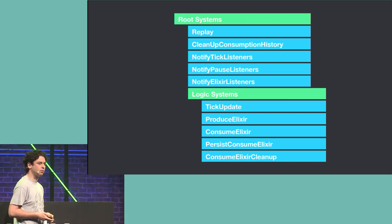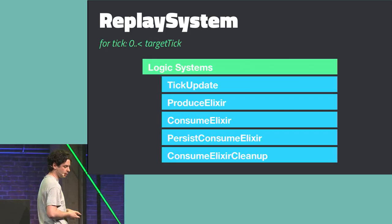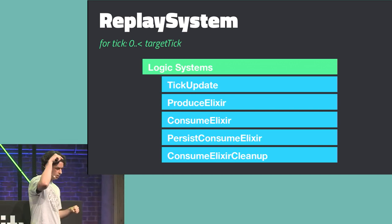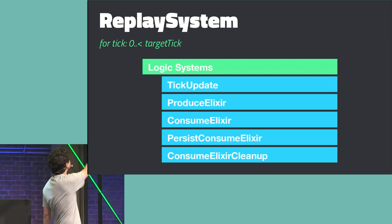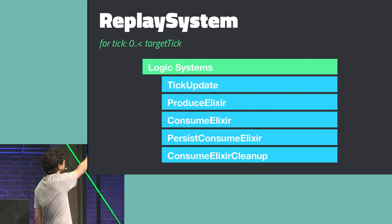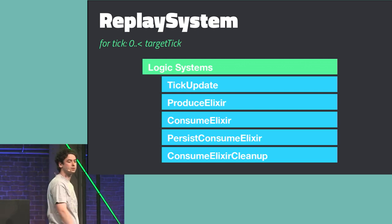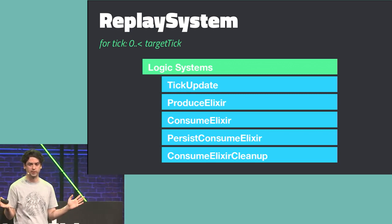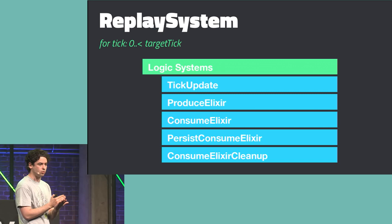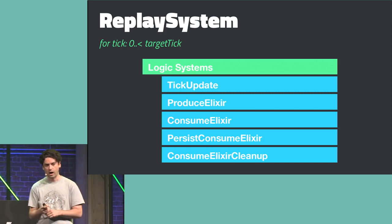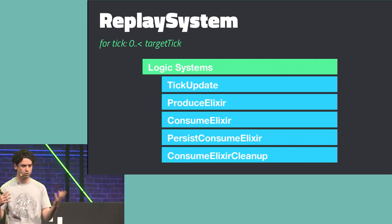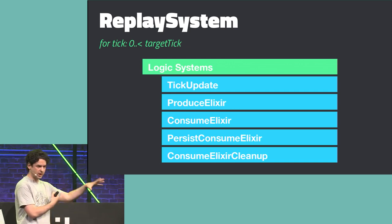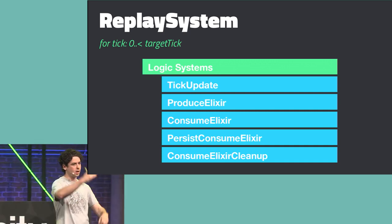How does the replay system work? The replay system is a reactive system that triggers on the component telling us the target tick. When it triggers, it runs a for loop from zero to the target tick, executing the logic systems. That's it — time travel becomes pretty much trivial to implement. This is the same approach for back-end validations. I worked on a simulation game where we ran very complex simulations on the back end using this exact idea: capture the input, serialize it, and run it through.